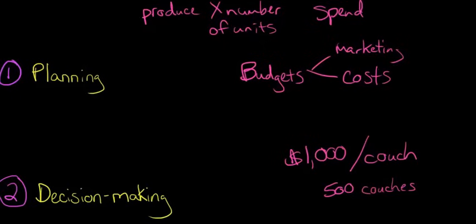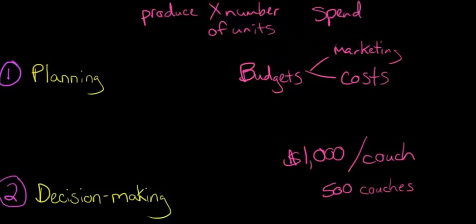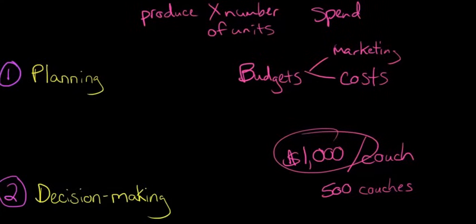We should not be selling that couch for less than what it costs us to produce it, unless we had a really compelling reason to do so, like market penetration or something like that. But typically, you want to, at a minimum, have this benchmark and say, does this thousand dollars a couch, does that match what it costs us to basically produce a couch?